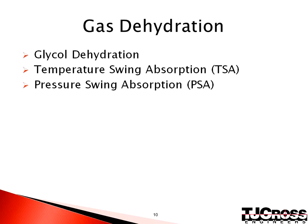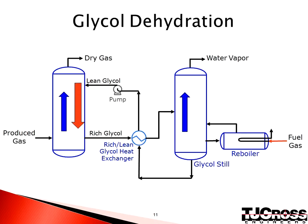Produced gas also contains water, which must be removed prior to sales or fuel use. There are several methods to dehydrate the gas. The most common method is glycol dehydration. However, some gas plants use temperature or pressure swing absorption units that heat or reduce pressure to extract the water, along with other constituents. In most cases, water must be reduced to below 7 pounds per million standard cubic feet. The glycol dehydration method is similar to the CO2 removal system discussed earlier, except that here we are circulating glycol instead of amine. The lean glycol extracts the water from the produced gas and is boiled off in the still.